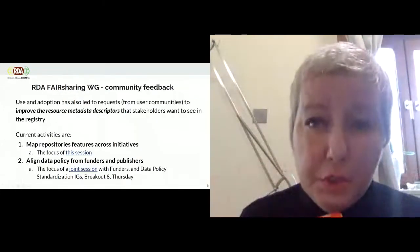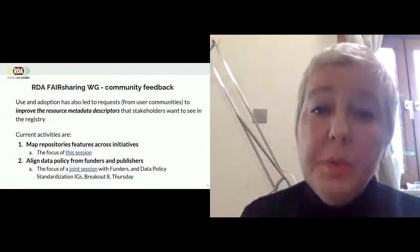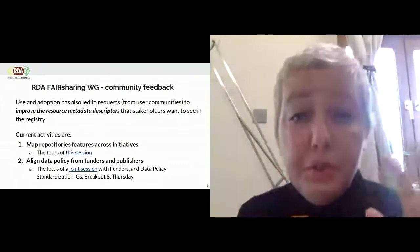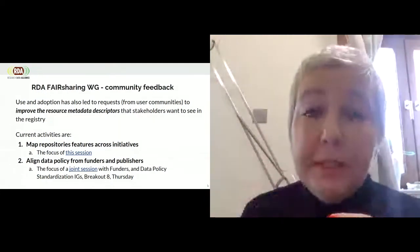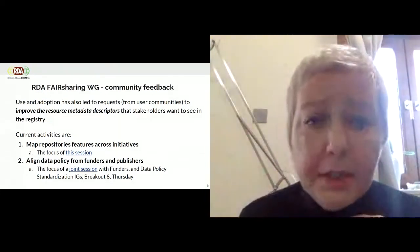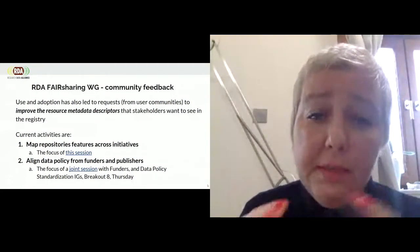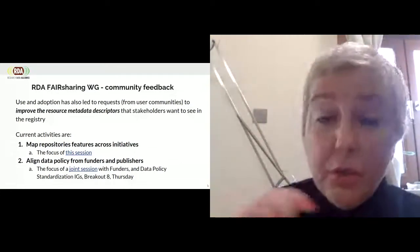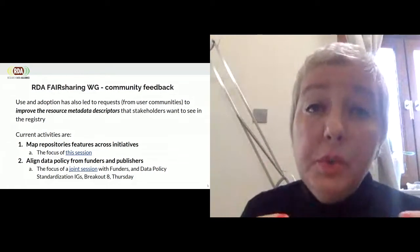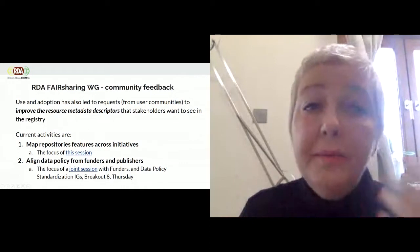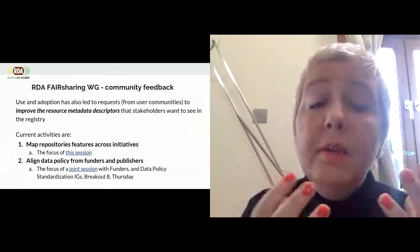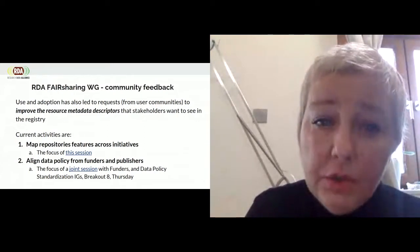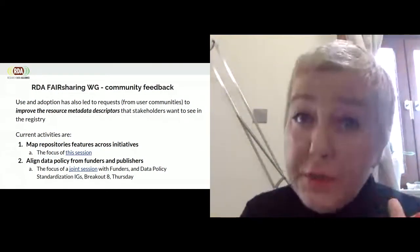This brings me to the reason why we're doing this session. Because of this adoption and use, we received feedback from different user communities that we need to improve the description of these resources — the description of the standard, the repository, the policy. Those are the descriptive metadata that users want to see in the FAIRsharing registry and perhaps in other registries too. That's why we are doing two activities: one is to map the description of the repository across different initiatives, which is the scope of this session. We're also trying to enhance the description of the policy — specifically from funders and publishers — to make sure they are well-described and comparable. This is the scope of another session on Thursday, led by the funder interest group and the data policy standardization interest group.